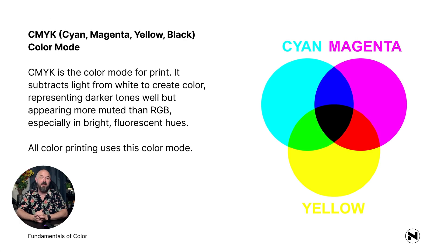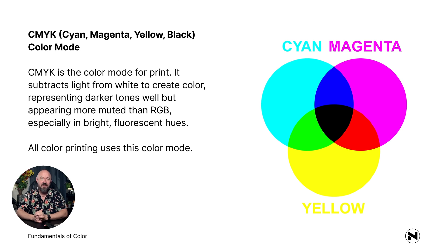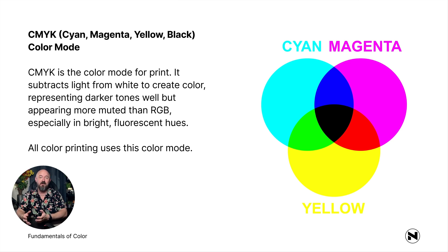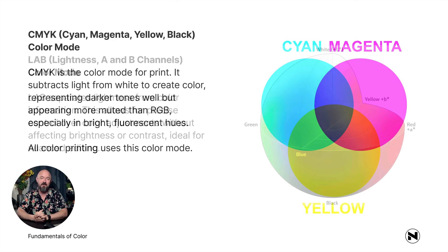Next we have CMYK — cyan, magenta, yellow, and black, where K stands for key color. CMYK is the color mode for print. It subtracts light from white to create color, representing darker tones well, but appearing more muted than RGB, especially in bright fluorescent hues. All color printing uses this color mode.